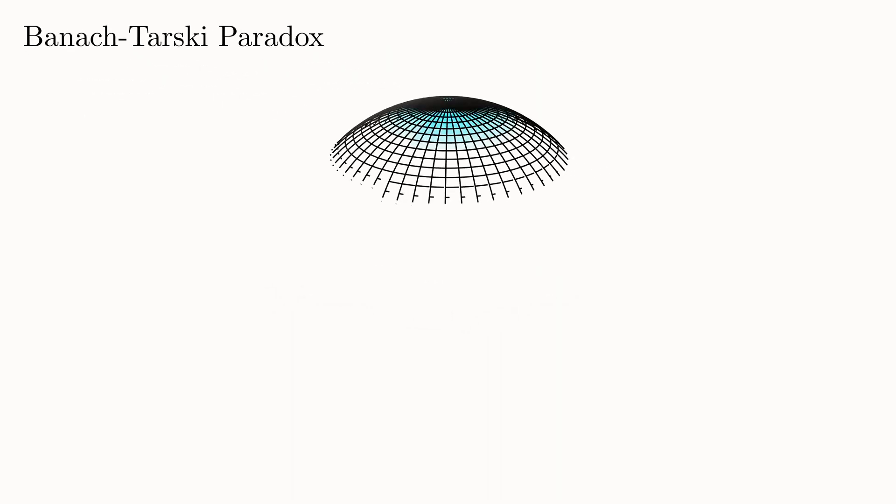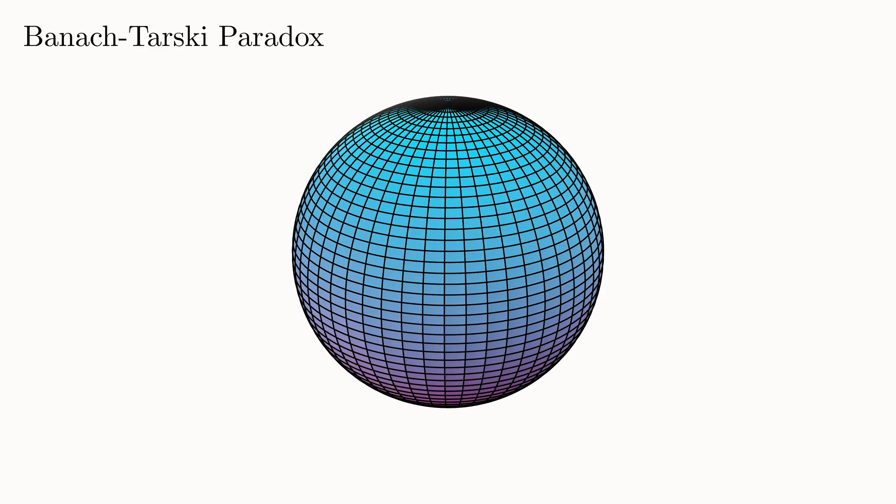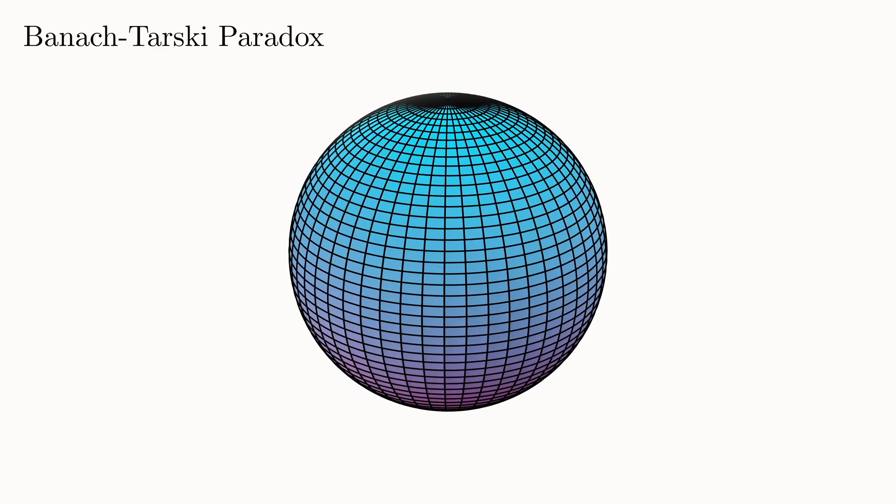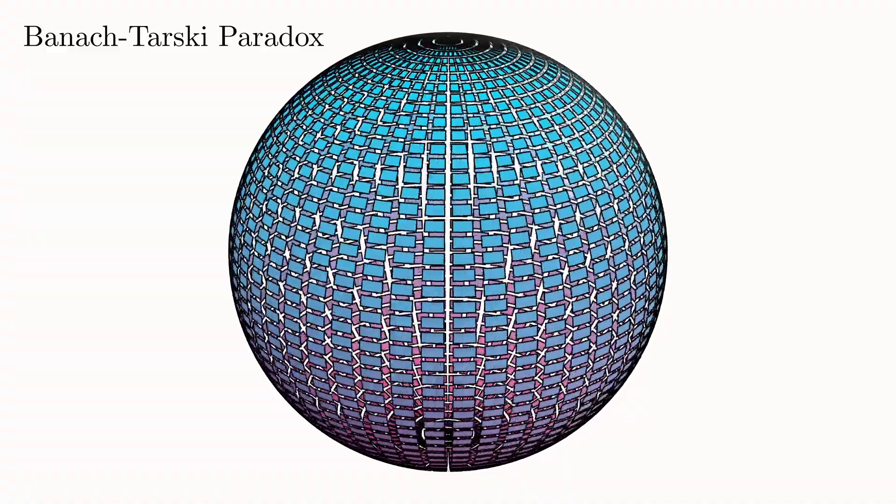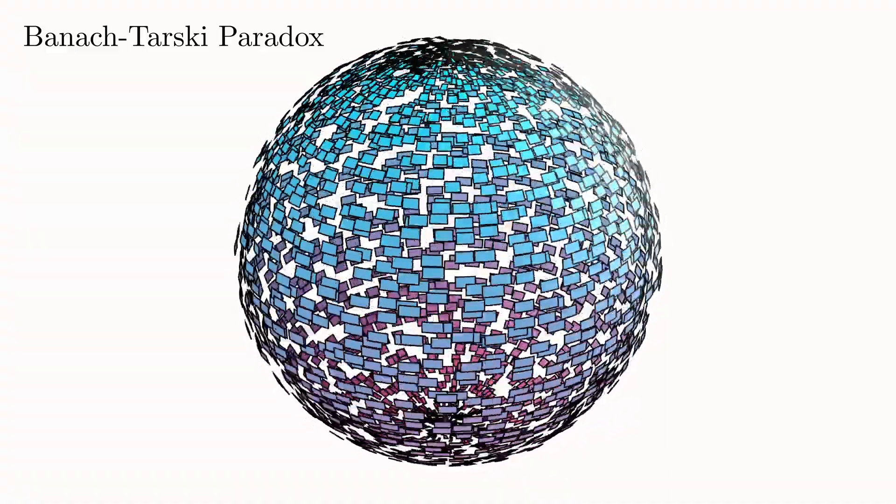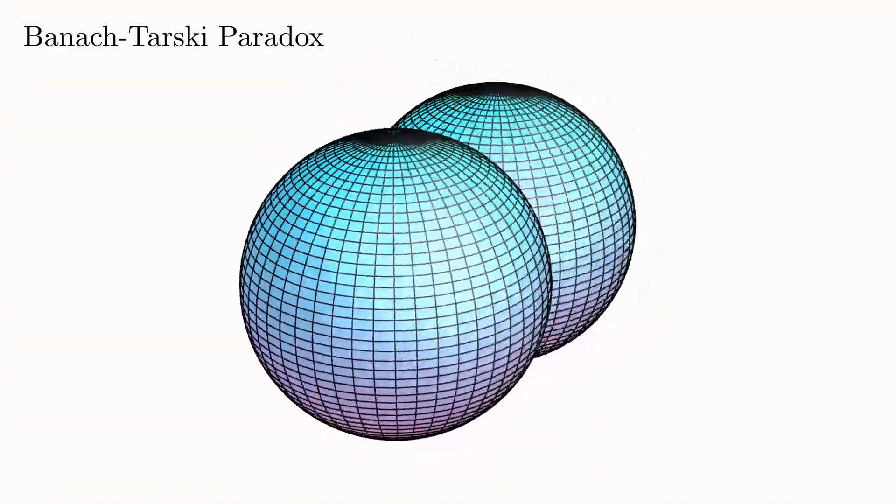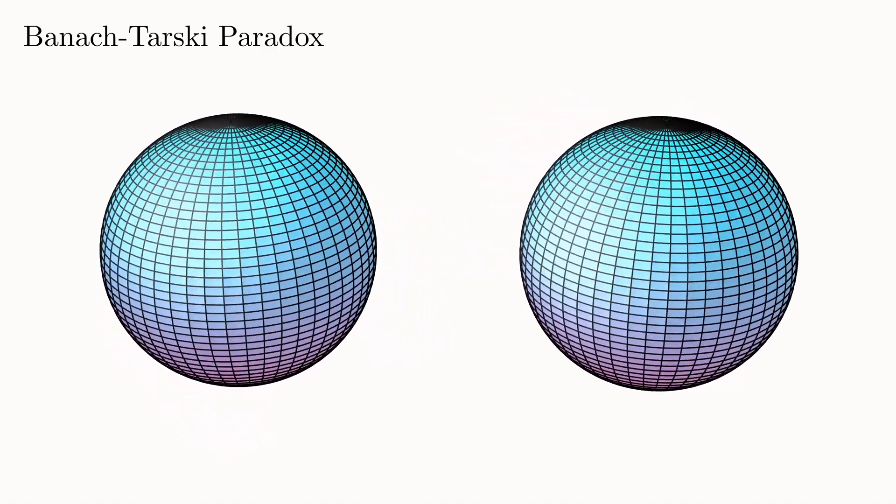As a brief recap, the Banach-Tarski paradox is a mathematical theorem that says you can take a sphere of a fixed volume, disassemble it into finitely many pieces, then reassemble the pieces to form two spheres of the exact same original size.